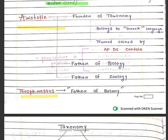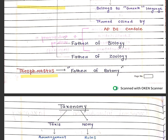Next scientist: Aristotle. Aristotle is also known as the founder of taxonomy. Taxonomy belongs to the Greek language. The term taxonomy was coined by A.P. de Candolle. Aristotle was also known as the father of biology and father of zoology.